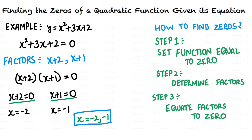Thus, x equals negative 2 and x equals negative 1 are the zeros of the quadratic function x squared plus 3x plus 2.